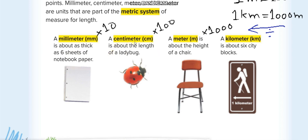One centimeter is about the size of a ladybug — not exactly, but as an estimation. The short form for centimeter is cm. If you join 100 centimeters together, you will get one meter. The short form for meter is m, and it is about the height of a chair.